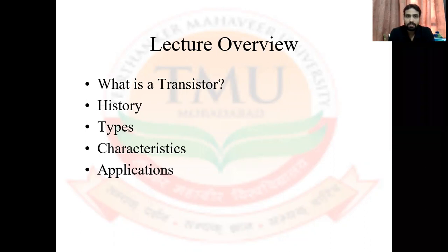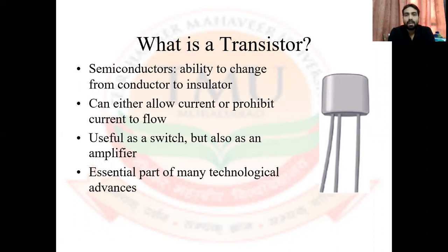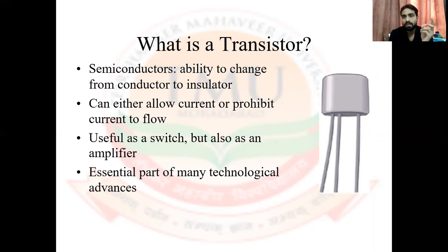We will discuss what a transistor is, a little history, types, characteristics, and applications. The three-terminal device is called a transistor. The name 'transistor' is a combination of 'transfer' and 'register' — it transfers a signal from low resistance to high resistance. All phenomena associated with the transistor are related to this concept.